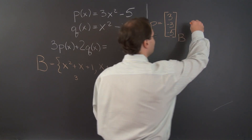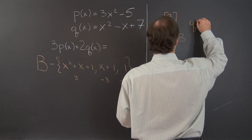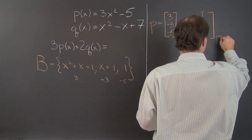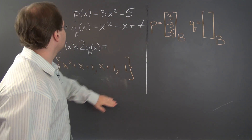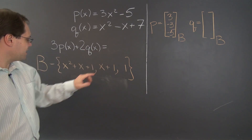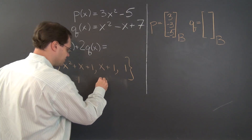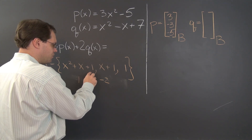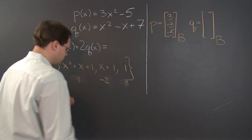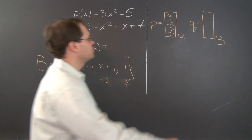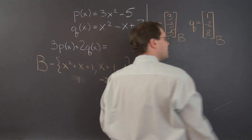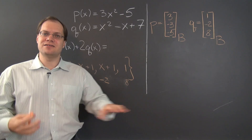So that's p, and now for q — similar exercise. q will equal, with respect to the basis b: to match x squared we have to take 1 of this; then to match x, we already have x from here, so negative 2. Now for the free terms, we have 1 minus 2, that's minus 1, so 8. So q equals 1, negative 2, 8. Our problem has therefore been translated into the component space.